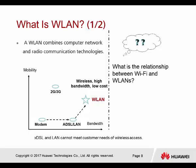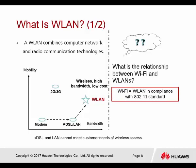Comparing the modem and the ADSL, or LAN, both have the same level of mobility. But when comparing bandwidth, ADSL or LAN gives more bandwidth than the modem. Comparing LAN with WLAN, WLAN can give even more bandwidth and higher mobility. And comparing 3G and 2G with WLAN, 2G and 3G have better coverage distance than WLAN. Wi-Fi is a WLAN in compliance with the 802.11 standard.